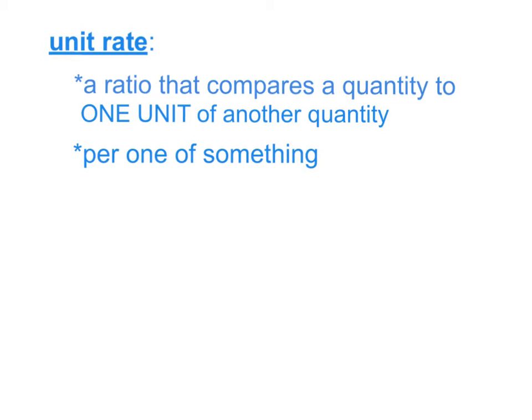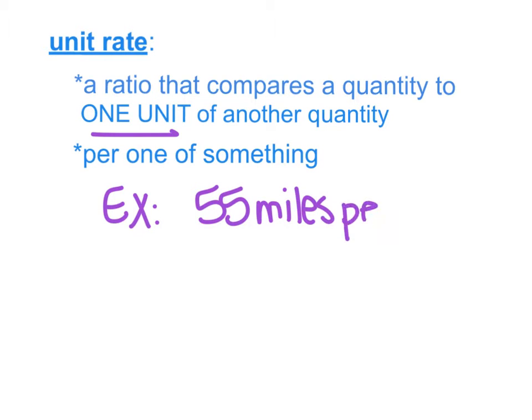A unit rate is a ratio that compares a quantity to one unit of another quantity. You sometimes hear it referred to as per one of something. For an example here, we might have speed limit signs on the highway, 55 miles per hour. That's a unit rate because you're talking about how many miles you go in one hour. This per is talking about in one.